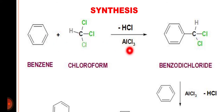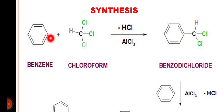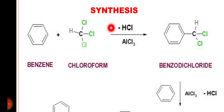The reaction is a Friedel-Crafts alkylation reaction, falling under the category of electrophilic aromatic substitution. One hydrogen of the benzene ring and one chlorine of chloroform are liberated as HCl.